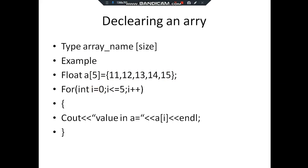An important note: displaying an array totally depends on a loop. Here we use a for loop. The for loop starts at zero, because arrays start from index zero. At index zero it will show 11, then the value is incremented and at index one it will show 12, similarly 13, 14, and 15. All the values in the array are shown using this statement.